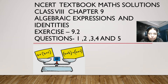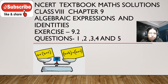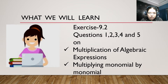Hello everyone, this is Mamata Amun and today we will learn and solve exercise questions from Exercise 9.2, Chapter 9, questions 1 to 5. The chapter name is Algebraic Expressions and Identities of Class 8 NCERT textbook Mathematics. Today we will learn multiplication of algebraic expressions — multiplying monomial with monomial.